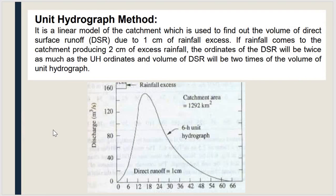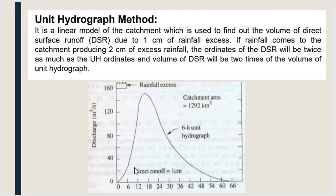The next method is the unit hydrograph method, which will be studied in detail in following topics. A unit hydrograph is a graph plotted against direct runoff and discharge. When rainfall starts, runoff is zero. As rainfall continues, soil layers absorb initial rainfall before runoff begins. Runoff then rises with intensity to a peak point, decreases as intensity reduces, and finally reaches a stable portion. If runoff due to 1 cm of rainfall is known, runoff for any rainfall amount can be determined.